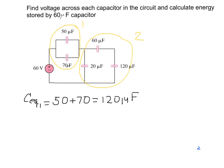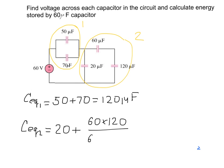For the second group, we have a 20 microfarad capacitor connected in parallel with two capacitors — 60 and 120 microfarads — that are connected in series. The equivalent capacitance for the second group is 20 plus (60 × 120) / (60 + 120), and the answer is 60 microfarads.